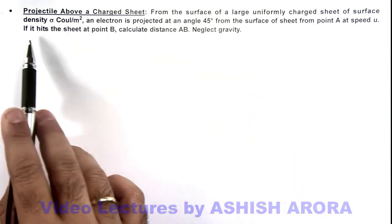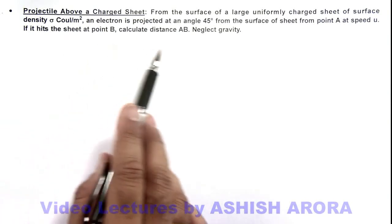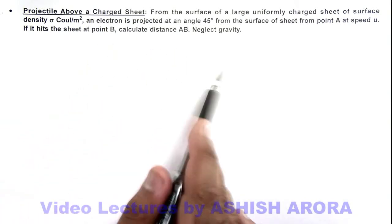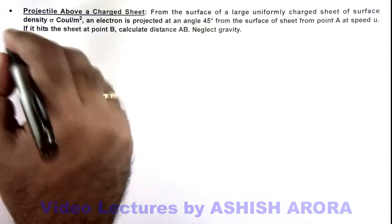It is saying if it hits the sheet at point B, we are required to calculate the distance AB, and we are given to neglect gravity in this case.